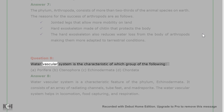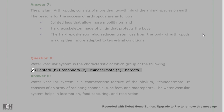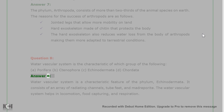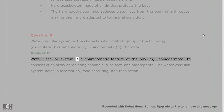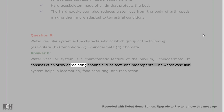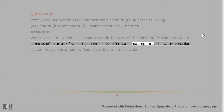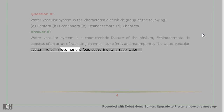Question 8: Water vascular system is the characteristic of which group of the following? A. Porifera, B. Ctenophora, C. Echinodermata, D. Chordata. Answer 8: Water vascular system is a characteristic feature of the phylum Echinodermata. It consists of an array of radiating channels, tube feet, and madreporite. The water vascular system helps in locomotion, food capturing, and respiration.